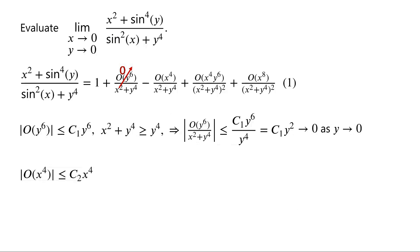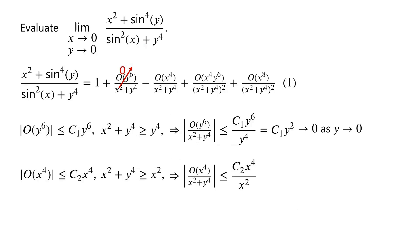Similarly, the modulus of big O of x to the power of 4 must be less than or equal to c2 times x to the power of 4 for some constant c2. And x squared plus y to the power of 4 must be greater than or equal to x squared. So the modulus of big O of x to the power of 4 over x squared plus y to the power of 4 is less than or equal to c2 times x to the power of 4 over x squared, which equals c2 times x squared, which tends to 0 as x tends to 0. Thus, by the squeeze theorem, big O of x to the power of 4 over x squared plus y to the power of 4 tends to 0 as x tends to 0 and y tends to 0.